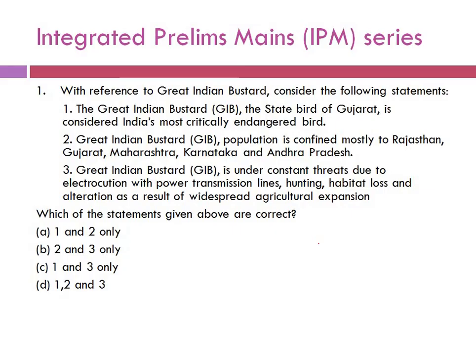Question number one: With reference to Great Indian Bustard, consider the following statements. Statement 1: The Great Indian Bustard, the state bird of Gujarat, is considered India's most critically endangered bird. Statement 2: Great Indian Bustard population is confined mostly to Rajasthan, Gujarat, Maharashtra, Karnataka and Andhra Pradesh. Statement 3: Great Indian Bustard is under constant threats due to electrocution with power transmission lines, hunting, habitat loss and alteration as a result of widespread agricultural expansion.